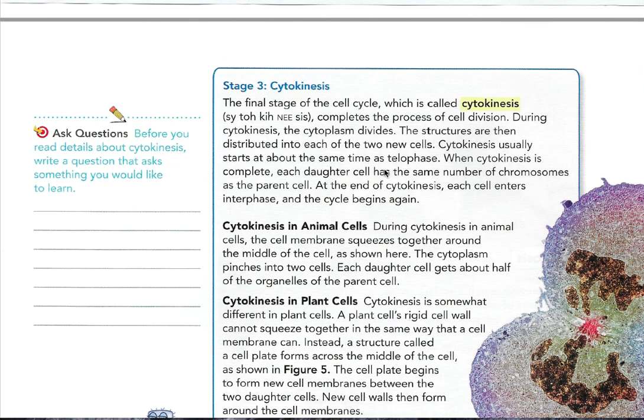Stage 3 is cytokinesis. The final stage of the cell cycle, called cytokinesis, completes the process of cell division. During cytokinesis, the cytoplasm divides and structures are distributed into each of the two new cells. Cytokinesis usually starts at about the same time as telophase. When cytokinesis is complete, each daughter cell has the same number of chromosomes as the parent cell. At the end of cytokinesis, each cell enters interphase and the cell cycle begins again.